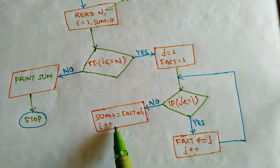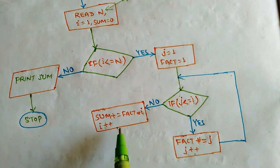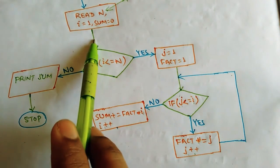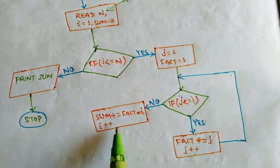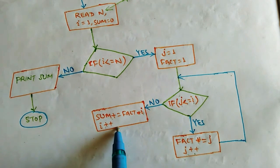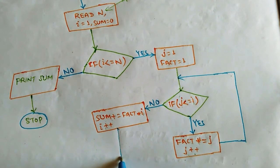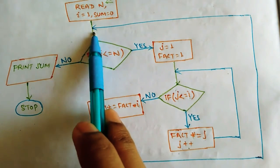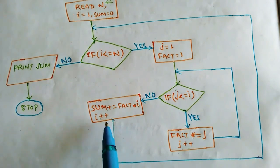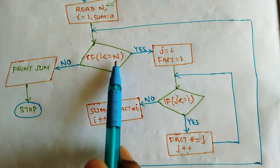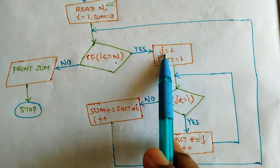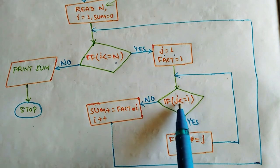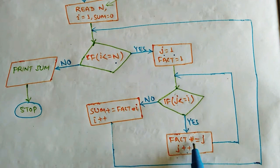We go back and now i is 2. Is 2 less than or equal to 4? Yes. j is reset to 1, fact is reset to 1. The inner loop runs: j goes from 1 to 2. fact becomes 1 times 1 = 1, then j increments to 2; fact becomes 1 times 2 = 2. Then j increments to 3.